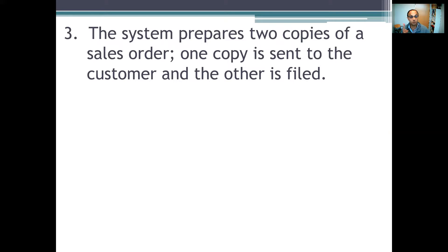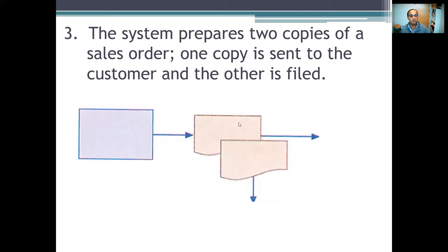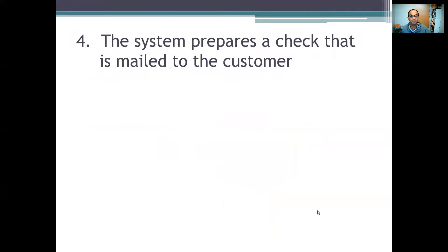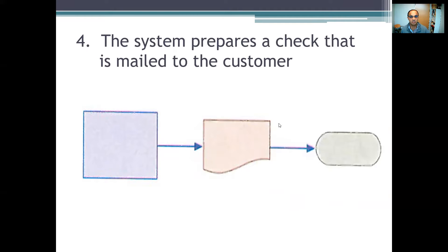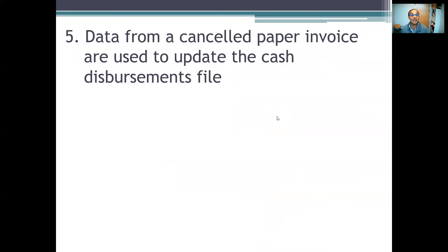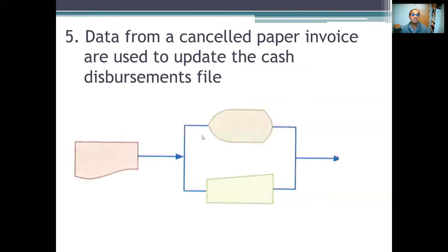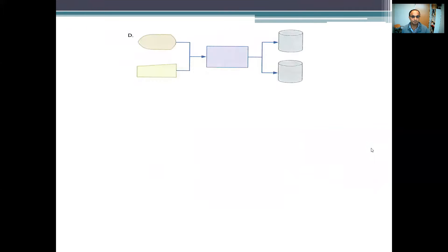Another example: the system prepares two copies of a sales order. One copy goes to the customer and the other is filed. So here the system — the electronic one — prepares a document and a copy. One goes to the customer and the other goes to filing, where the triangle symbol represents filing the document. Another example: the system prepares a check that is mailed to the customer — so the electronic processing produces a check that is then sent to the customer. And finally: data from a cancelled paper invoice are used to update the cash disbursement file — so we have the invoice as input, and then we send it to the database.